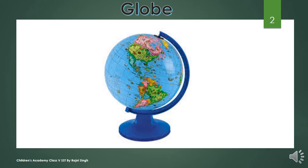We know that a globe is a small model of the earth — it is the miniature of the earth. When we look at the globe, we see several countries and places marked on it, such as India, US, Australia, etc.